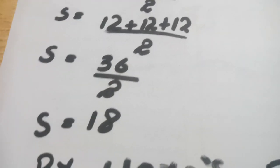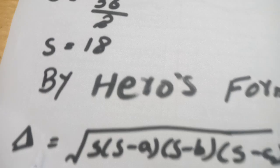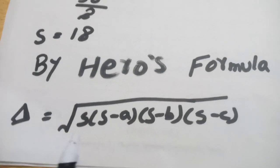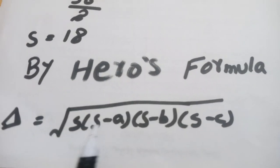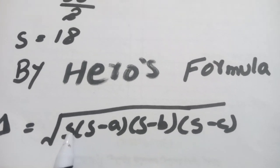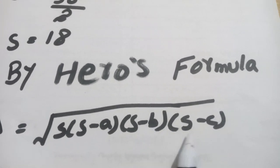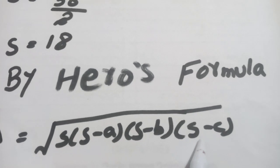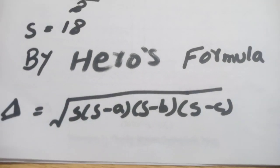Now to apply Heron's formula we have all the values, which is under the root s into s minus a, s minus b, and s minus c. Under the root, we've calculated the value of s, and a, b, c are the three sides of the equilateral triangle given in the question.